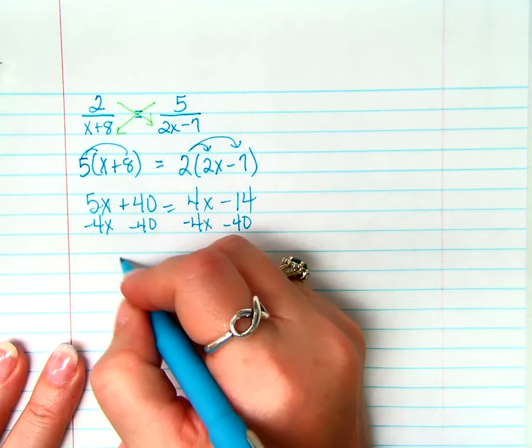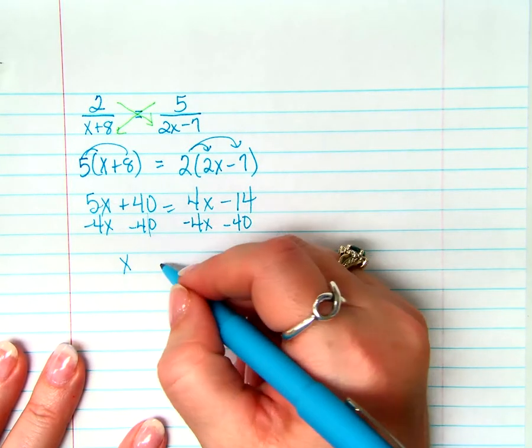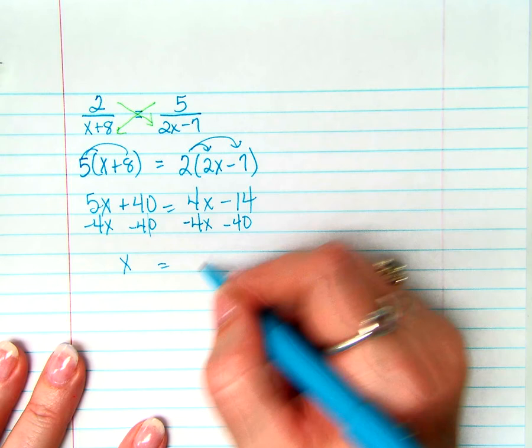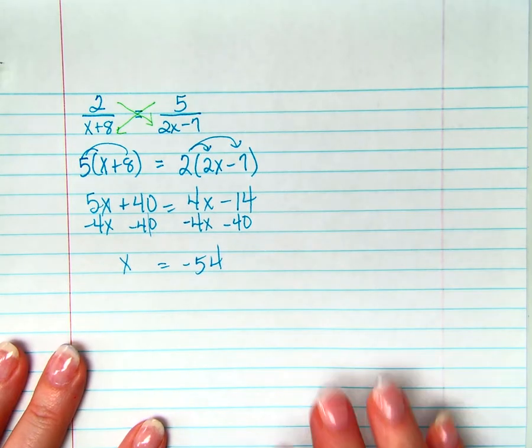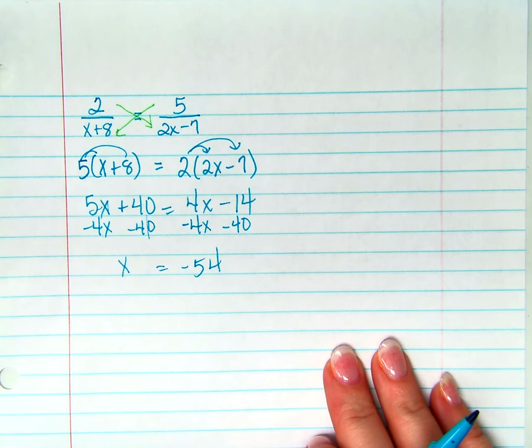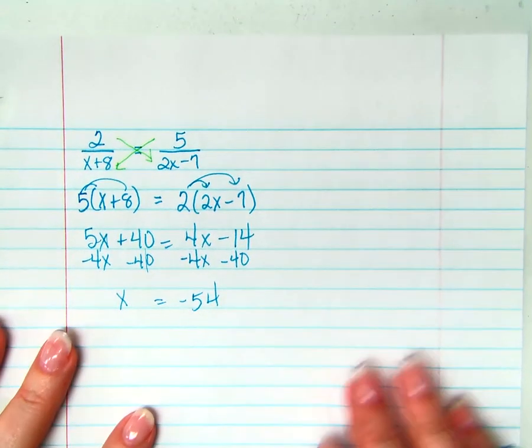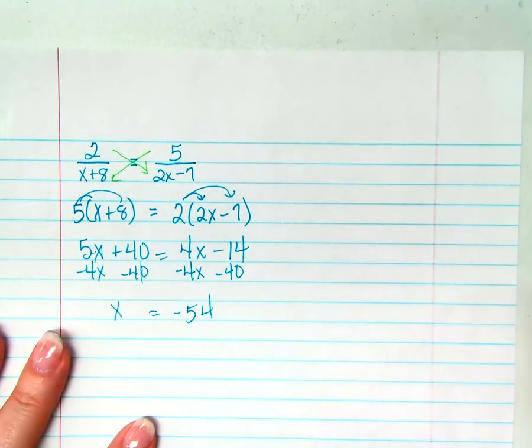So this is x, this is 0, this is 0, and this is negative 54. Are you sure that negative 54 is the right answer? Because a lot of times when you get an answer like negative 54, you're like, no, I did something wrong, that's weird.